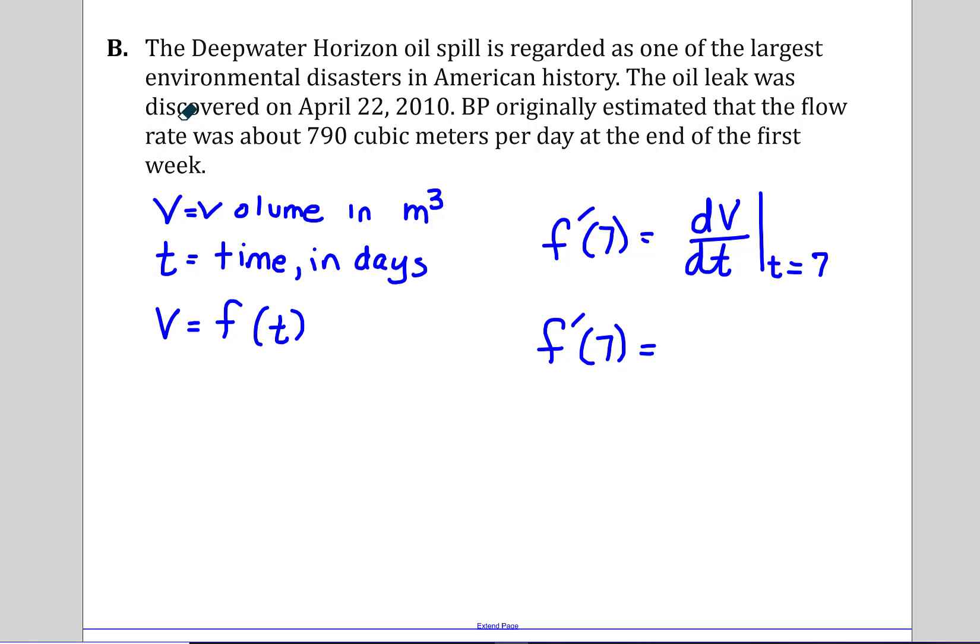In letter B, the Deepwater Horizon oil spill is regarded as one of the largest environmental disasters in American history. The oil leak was found on April 22nd in 2010, and BP originally estimated that the flow rate was about 790 cubic meters per day at the end of the first week. So we want to say that V(t) is the volume in cubic meters, and t is the time in days since it said per day. And at the end of the first week we would say that volume is a function of time. So f prime at the end of the week, that would be seven days, which would be the rate of change of volume with respect to time when time is seven. And they gave that to be 790 cubic meters, so 790 cubic meters per day would be that rate of change.